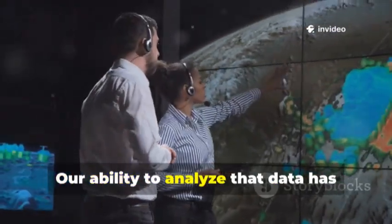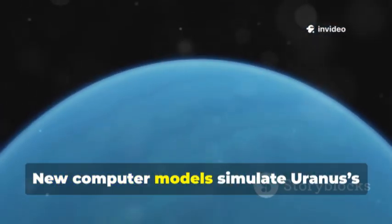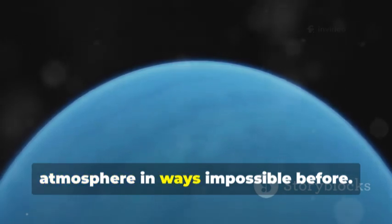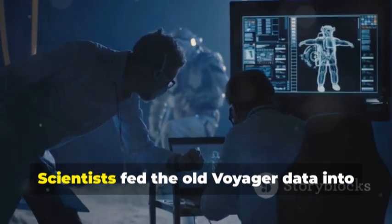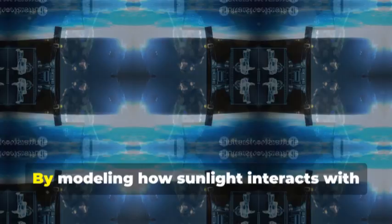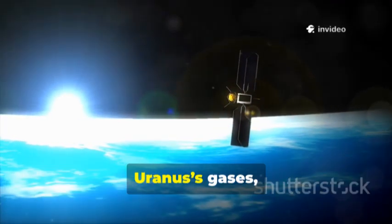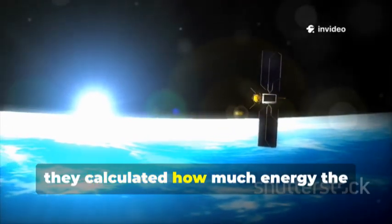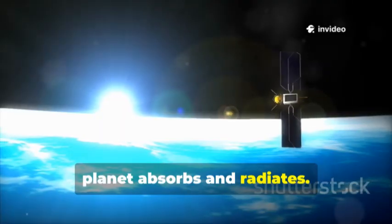Our ability to analyze that data has grown immensely. New computer models simulate Uranus's atmosphere in ways impossible before. Scientists fed the old Voyager data into these models peering deeper than ever before. By modeling how sunlight interacts with Uranus's gases, they calculated how much energy the planet absorbs and radiates.